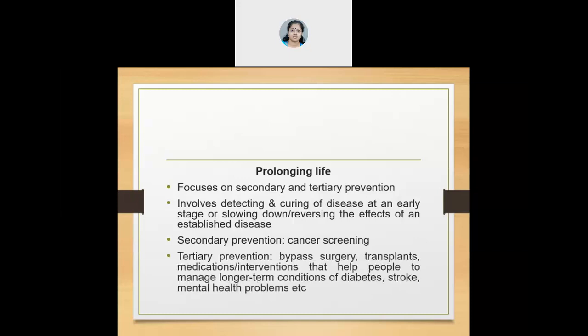What is secondary and tertiary prevention? For example, screening for cancers is very popular these days. Either through public health primary health centers or many hospitals, other agencies are actually conducting cancer screening, because an early screening will actually slow down the reverse impact.